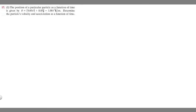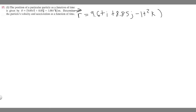In this problem, the position of a particle as a function of time is given by r = 9.6t·i + 8.85·j - t²·k, in meters. So we can rewrite it as r = 9.6t·i + 8.85·j - 1t²·k. We're told to determine the particle's velocity and acceleration as a function of time.